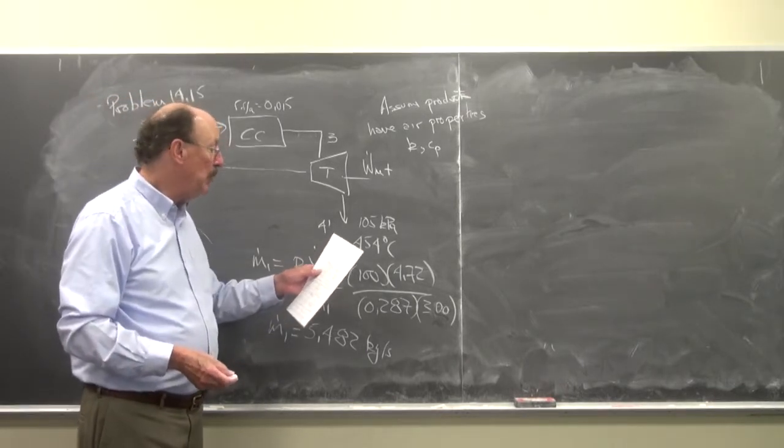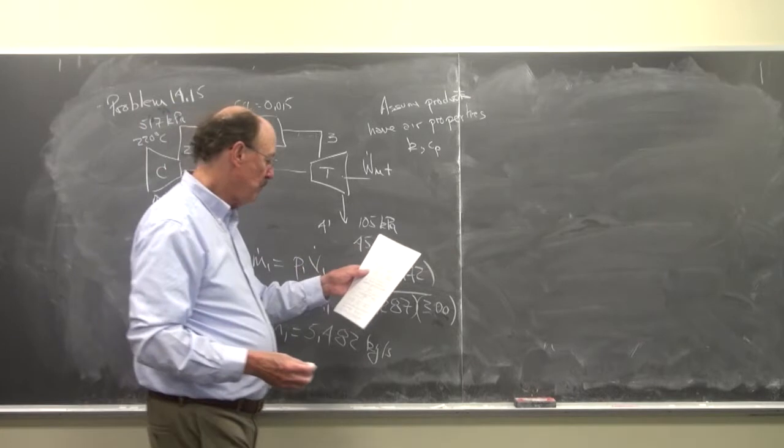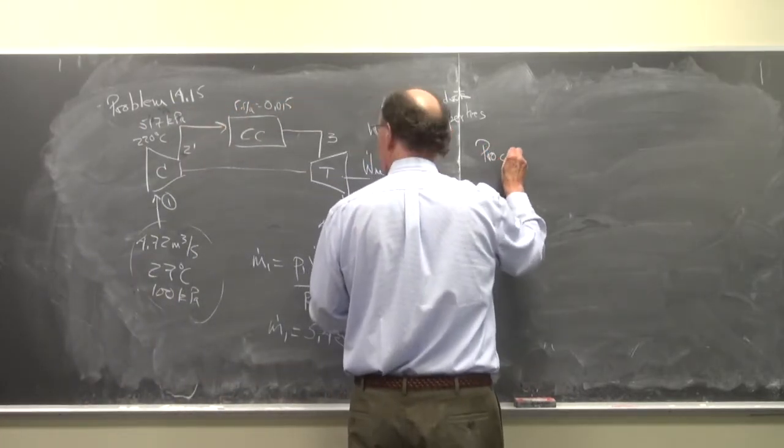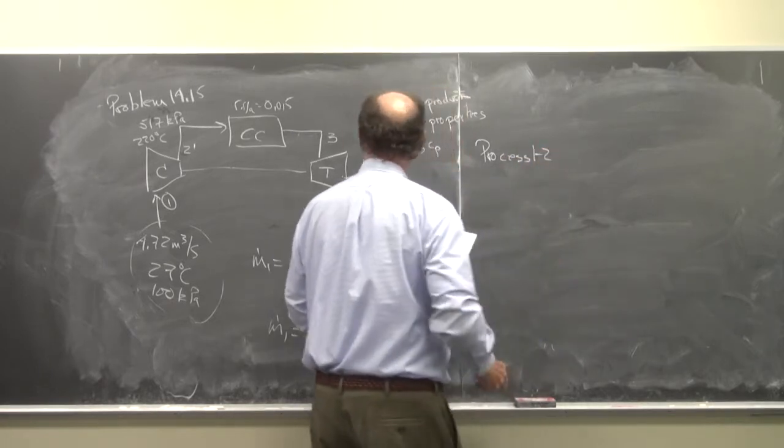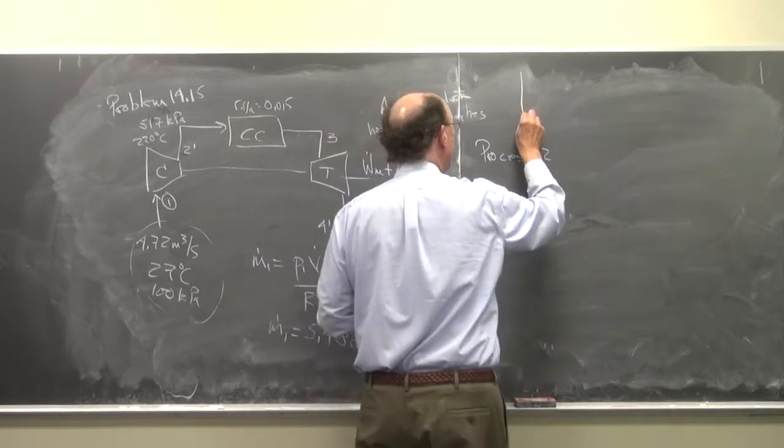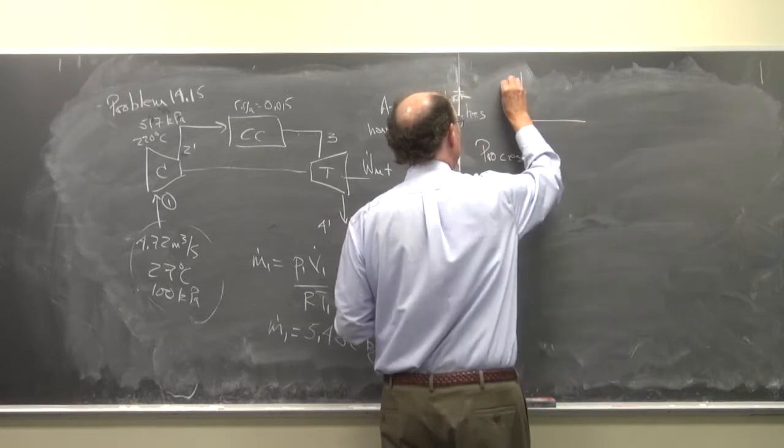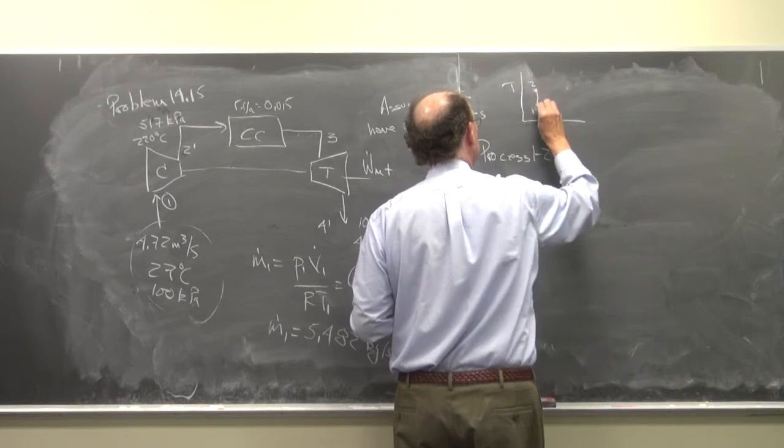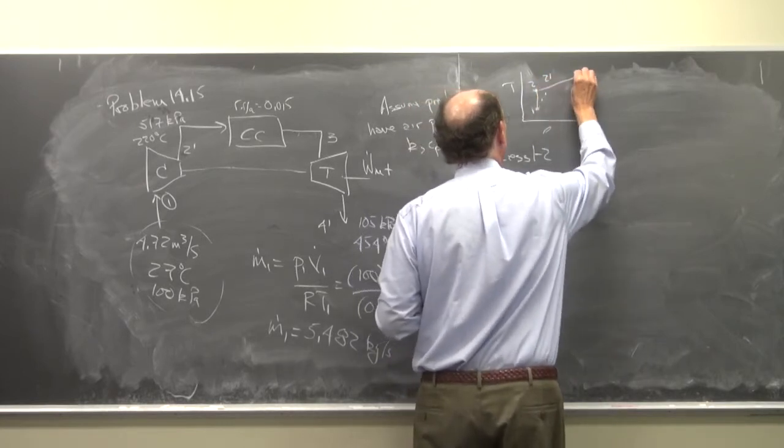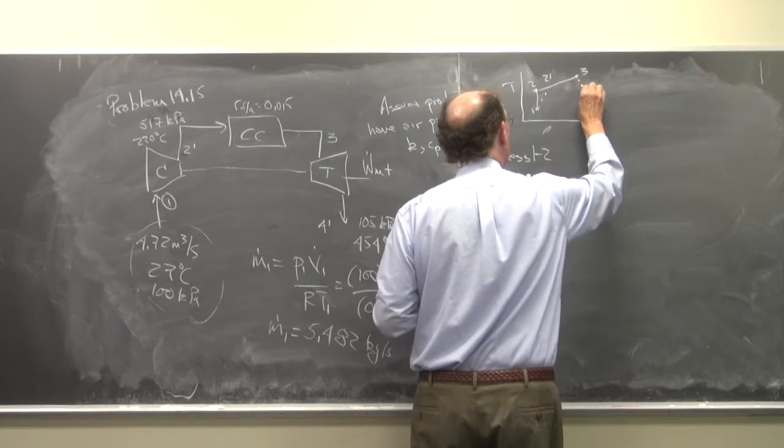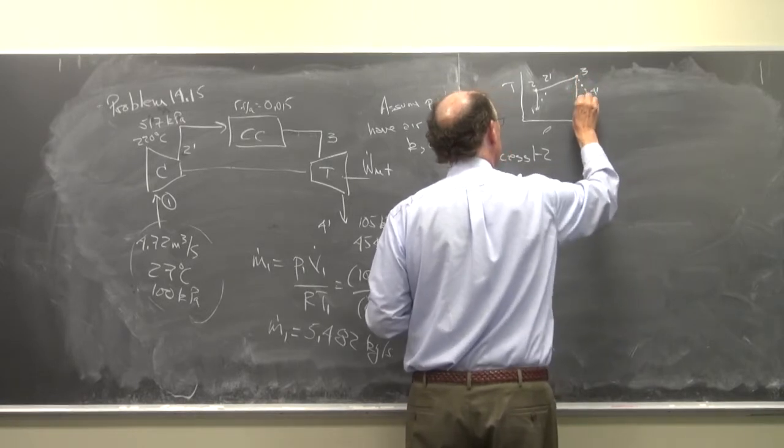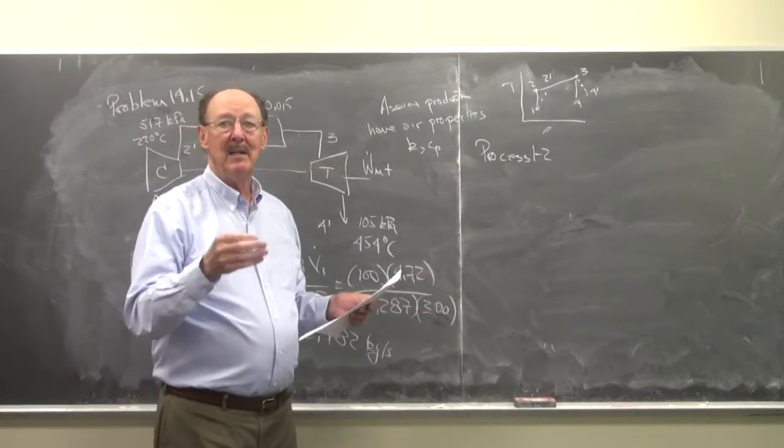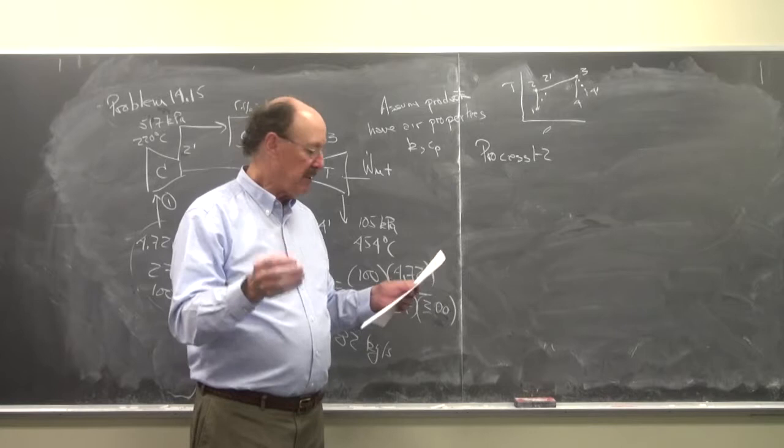And so now let's go through the cycle. So now we have our actual system on the T-S diagram. We're going 1 to 2 ideally, 1 to 2 prime actually, 3, 4 prime, 4. So we have that diagram. So what we're going to have to do is find the ideal values and calculate the efficiency.